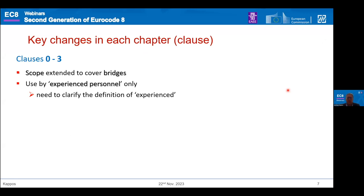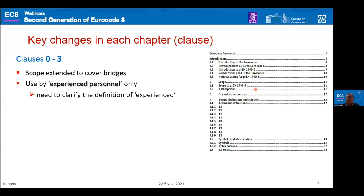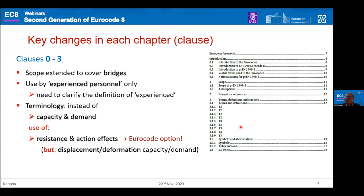There is also the use of experienced personnel, and some interesting aspects of terminology. The existing code, apparently influenced mainly by American documents, was using American terminology — capacity and demand is a very well-known American terminology. Now in the code, instead of capacity you will read resistance, and instead of demand you will see action effects. This is the Euro-continental convention. However, for displacement or deformation, you cannot really say resistance, so we use capacity and demand in those cases.